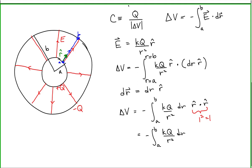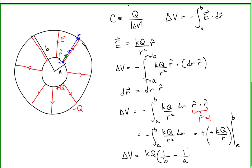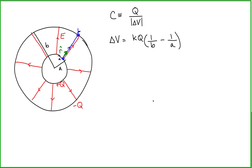A unit vector has a magnitude of 1, and the dot product of a vector with itself is the magnitude squared, so R-hat dot R-hat equals 1. When we integrate, we get minus times negative KQ over R, evaluated from A to B. That minus times a minus becomes a positive, and we get that the potential difference between the two points is equal to KQ times (1/B minus 1/A), which simplifies to KQ times (A minus B) over AB.